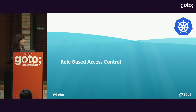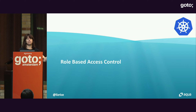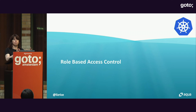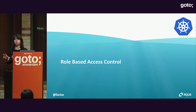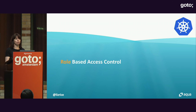Those abstractions are defined by what we call role-based access control in Kubernetes. In the past there were other forms of access control like ABAC, but if you're still using ABAC you should move on to role-based access control. The key is in the first word: roles.